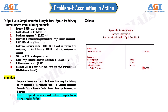To compute net income, we subtract total expenses from total revenues. Revenues are $10,000. By analyzing the Owner's Equity columns, we computed that the net income for April is $6,200.